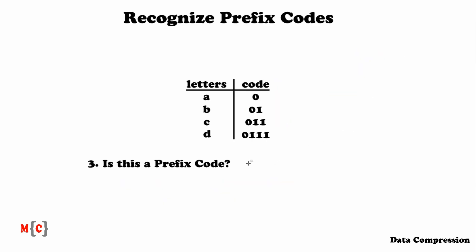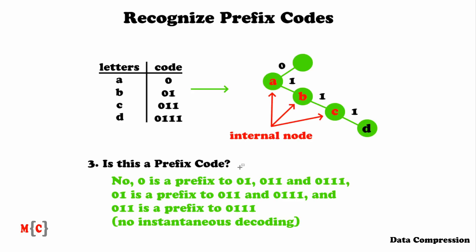Let's move on to the third question. We have the code where A is 0, B is 01, C is 011, and D is 0111. The answer is no, this is not a prefix code. If we look more closely: 0 is a prefix to 01, 0 is also a prefix to 011, 0 is also a prefix to 0111. Besides, 01 is a prefix to 011 and to 0111.